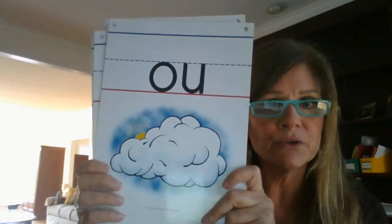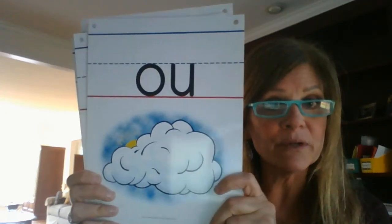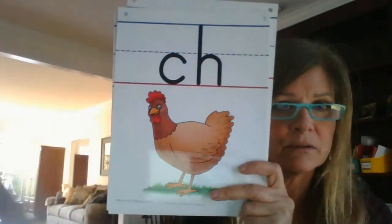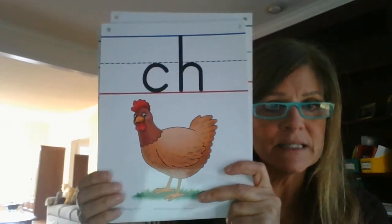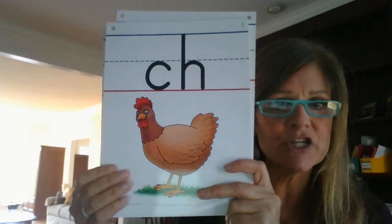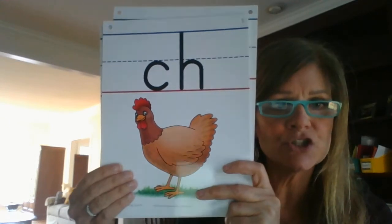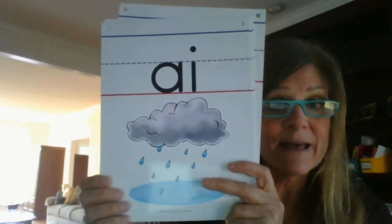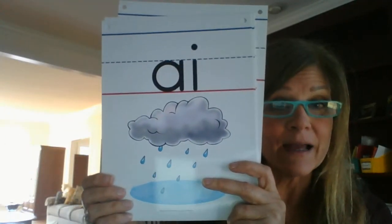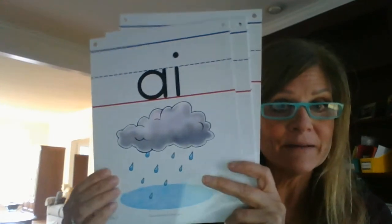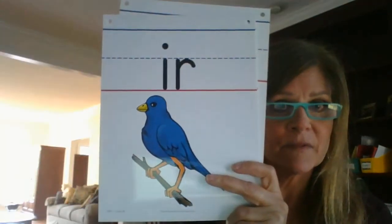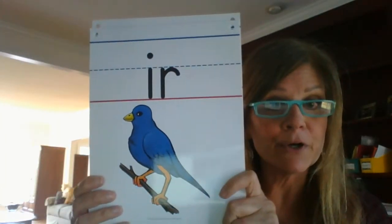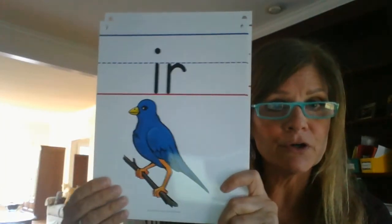O, U, Cloud — Ow. C, H, Chicken — Ch. A, I, Rain — A. A, I, R, Bird — Er.